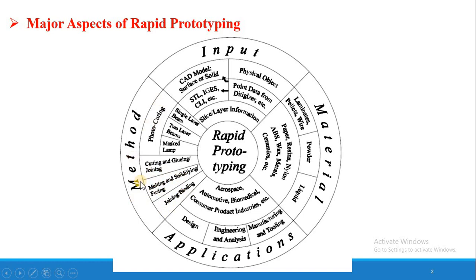There are various kinds of methods included in Rapid Prototyping that we will discuss in the next chapters. The last major aspect is application — where we apply this product in Rapid Prototyping. Applications are in the design field, engineering and analysis, and manufacturing and tooling. The major applications of Rapid Prototyping are in aerospace industry, automotive industry, biomedical engineering, and consumer product industries. So these are the 4 major aspects: input, material, method, and application.